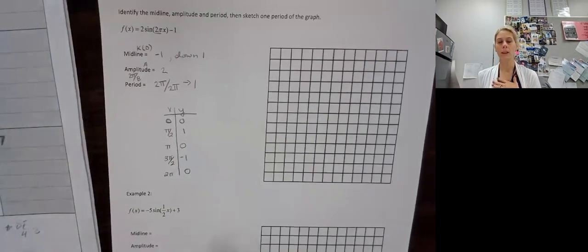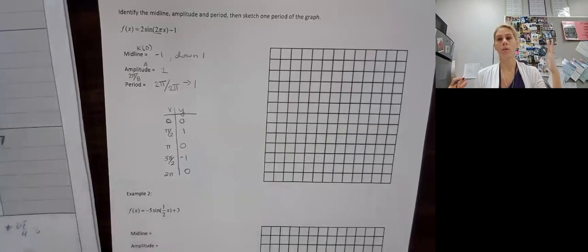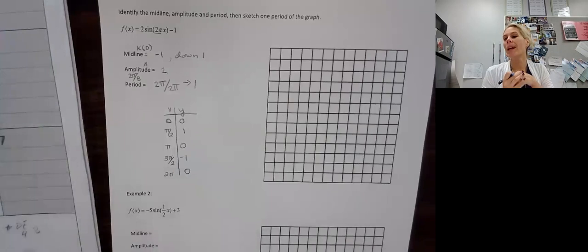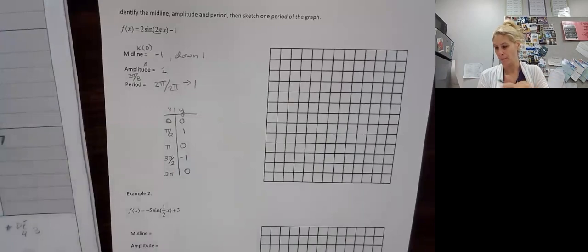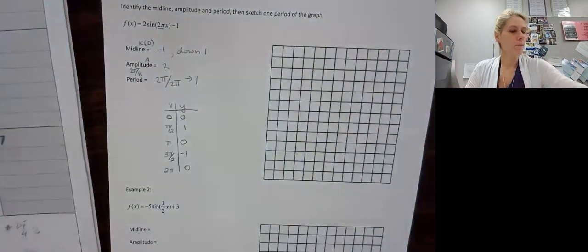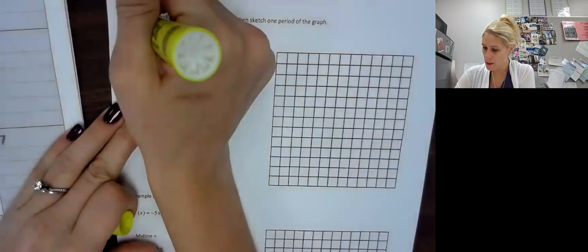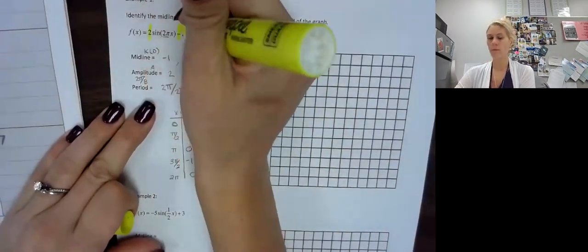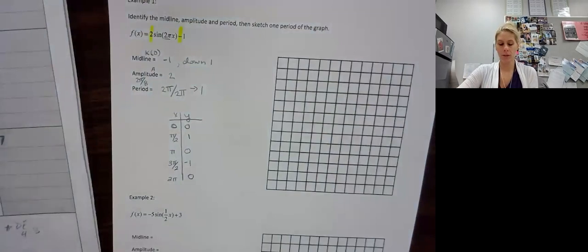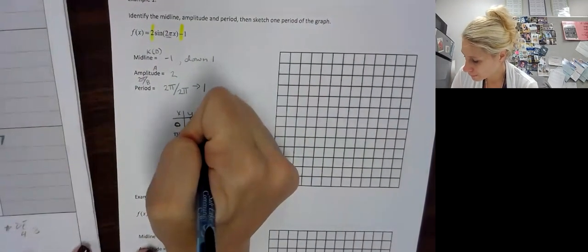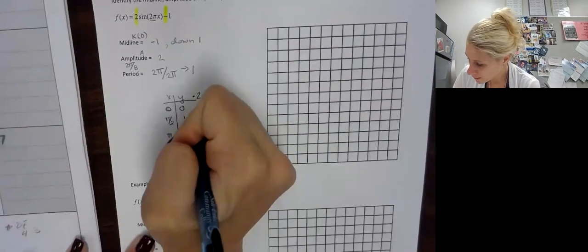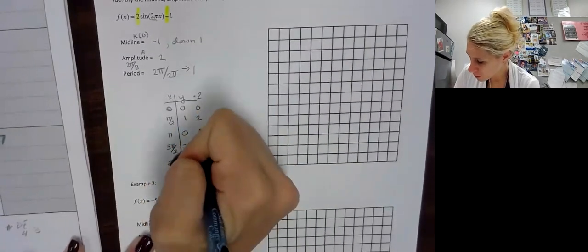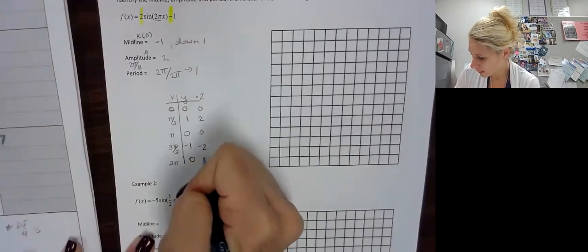Now we're going to do our transformations. Everything on the outside is done to Y, and you go from left to right. Everything on the inside is done to X, but we think of the opposite. Let's do our Y values first. On the outside we are dealing with the 2 and the negative 1. So first, we multiply Y by 2, giving us: 0, 2, 0, negative 2, and 0.